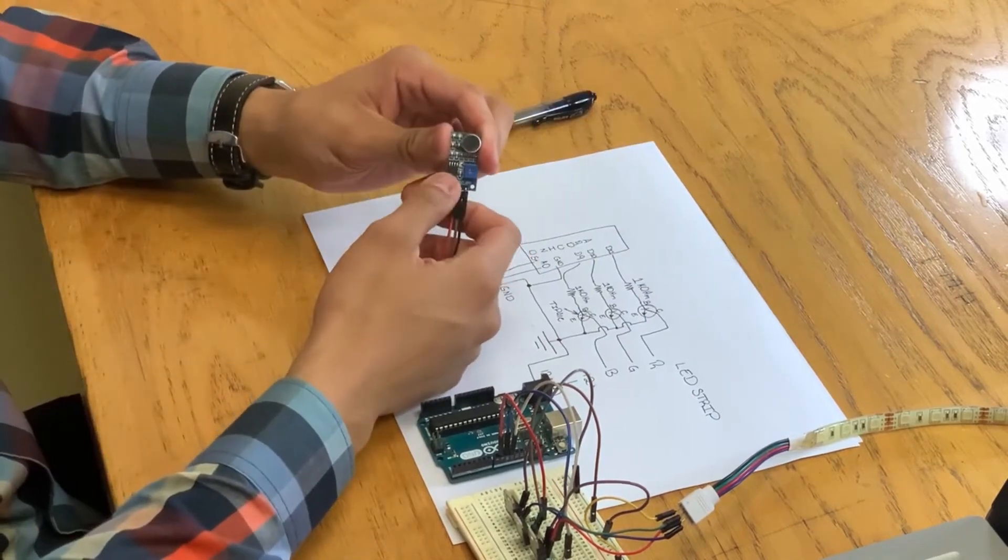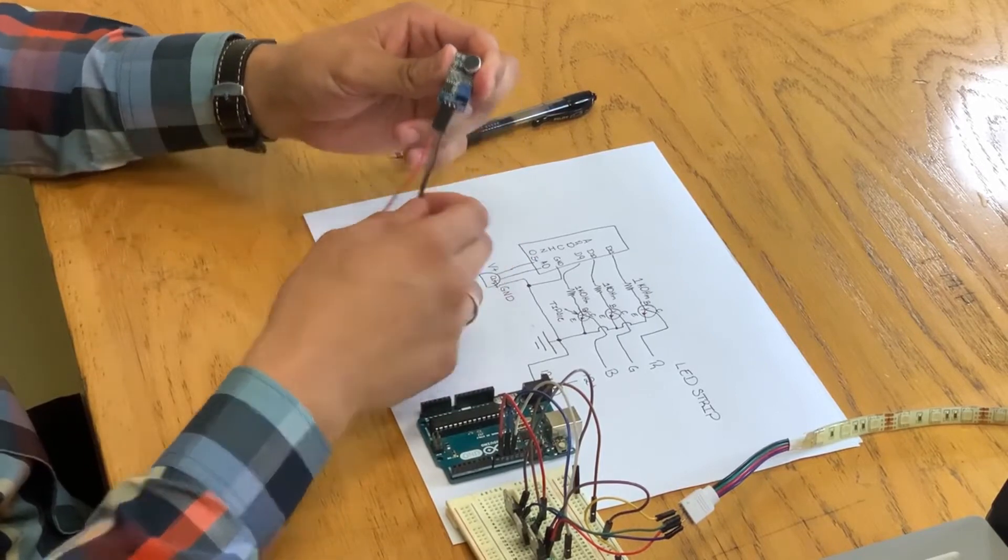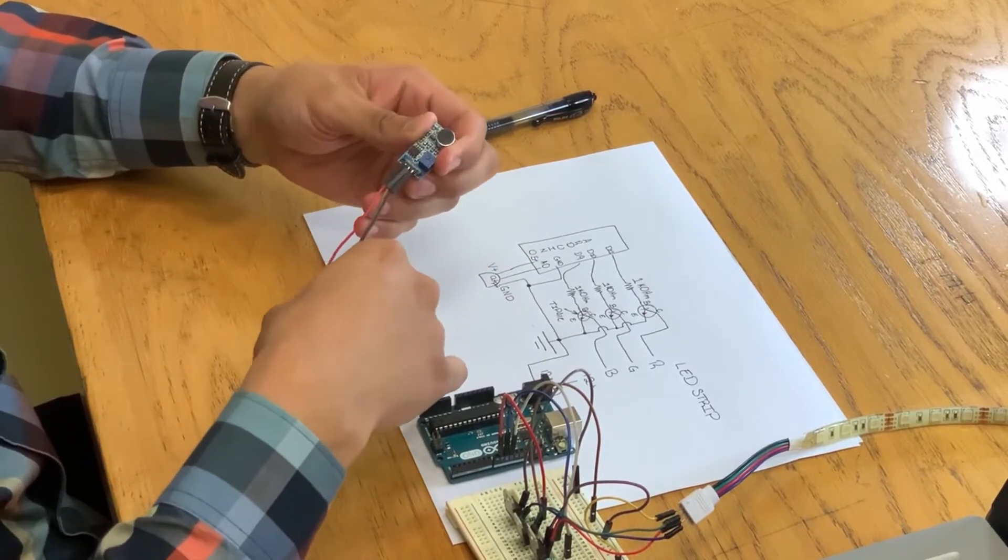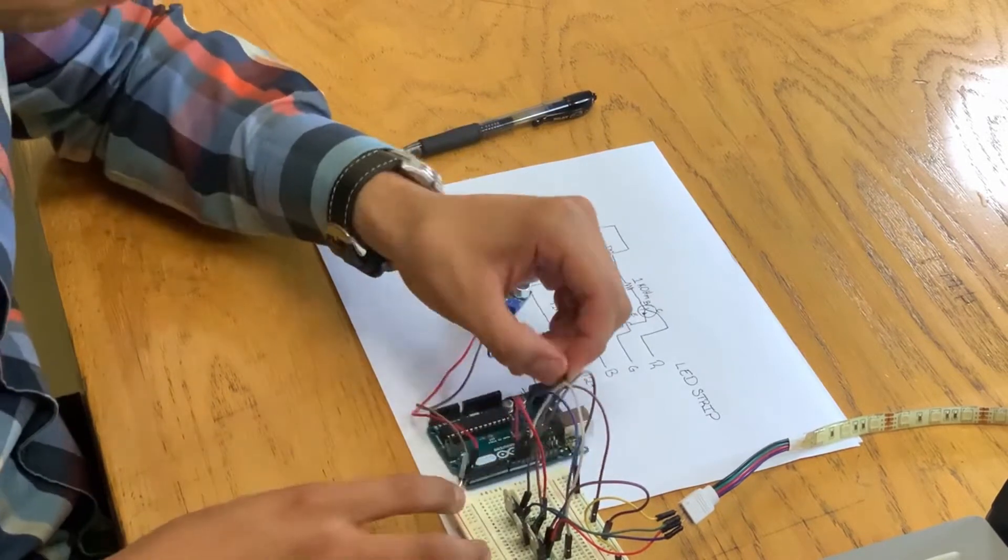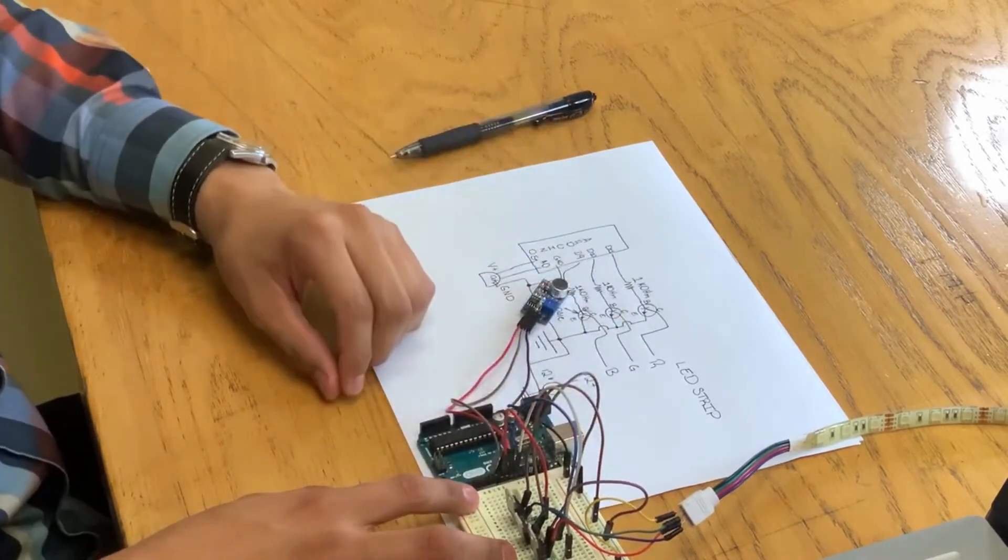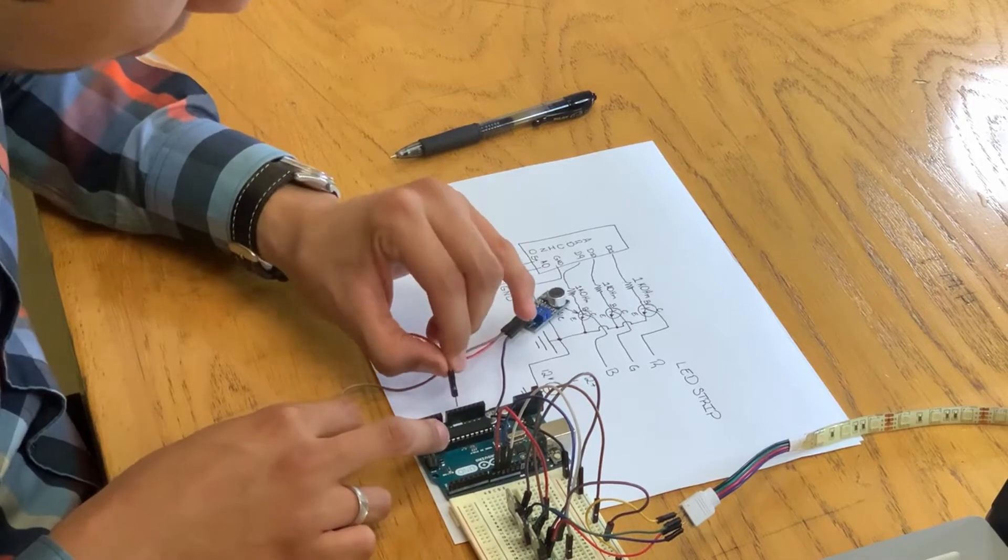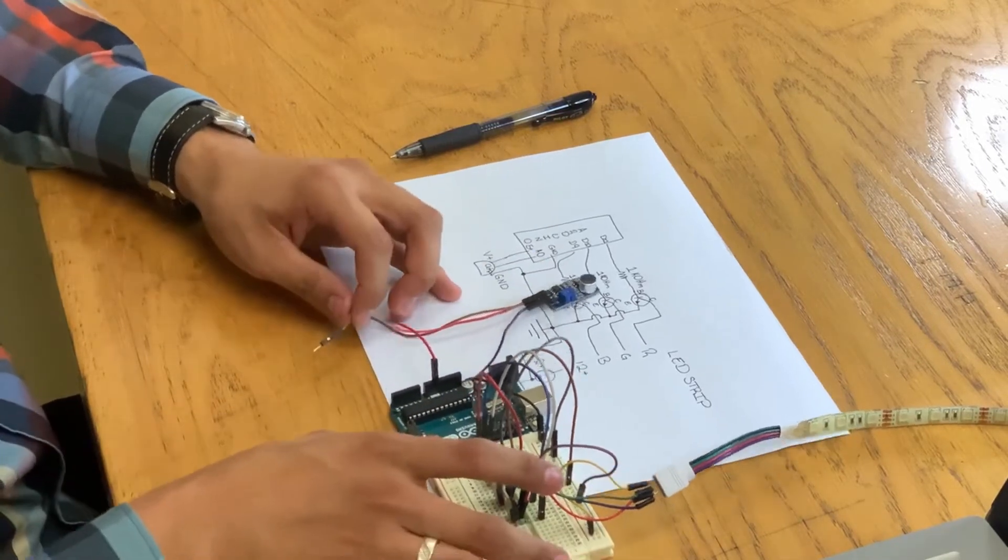This is my sound sensor. I already connected three female to male cables, and now I will make the connection with Arduino. To do so, we will connect ground to ground, input to 5 volts, and sensor output to A0.